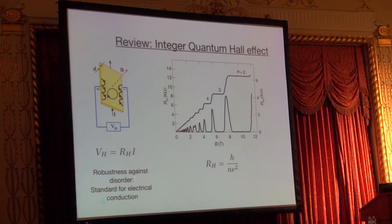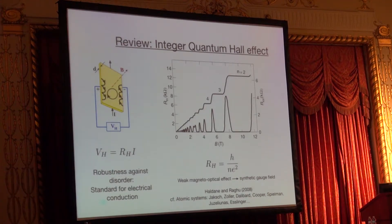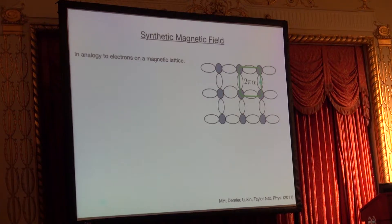That's why people have been using this as a standard for electrical conduction. So if we want to replicate the same idea, we should apply some magnetic field to photons. But photons are themselves electromagnetic waves — they interact very weakly with the magnetic field; we have basically this weak magneto-optical effect in the optical domain. So instead we have to synthesize the gauge field. This work has been really inspired by work done in the atomic physics community to synthesize the gauge field.